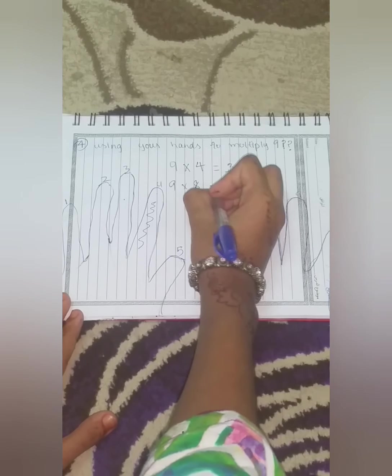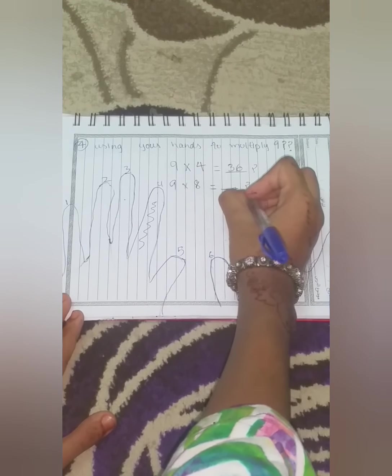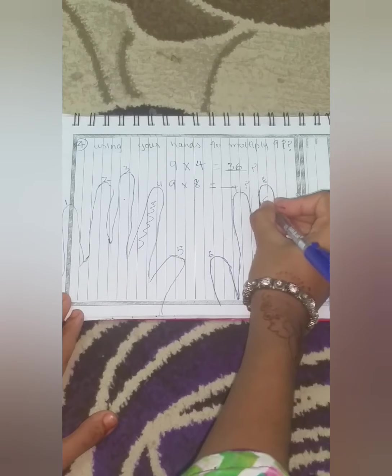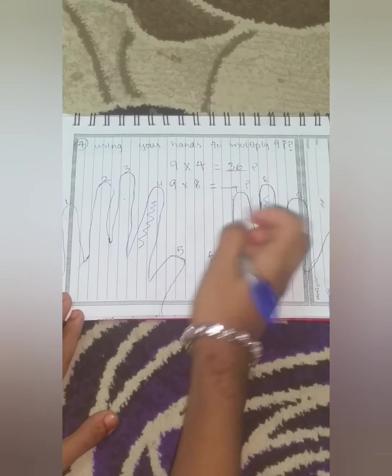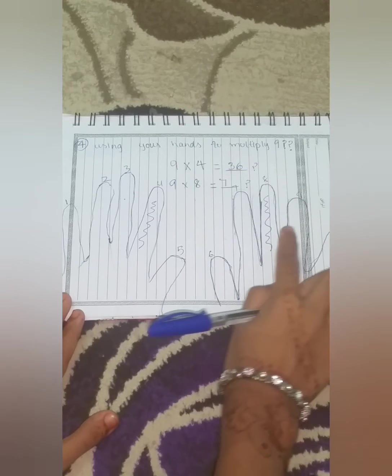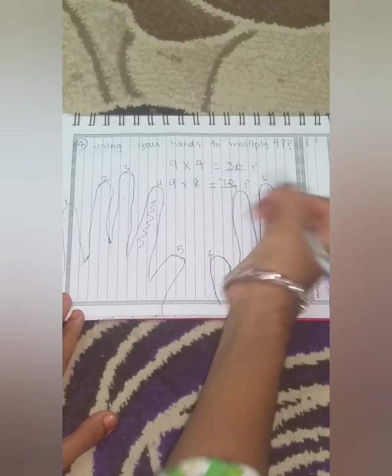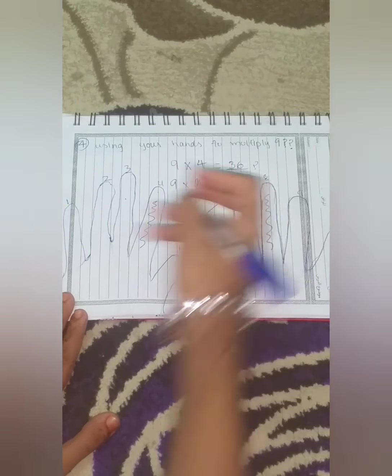Now in the next formula, we get 9 into 8. So when we mark out the finger 8, the previous number we get is 7. And how many fingers are left? 2. So we will write the second digit as 2. So here we get the answer.